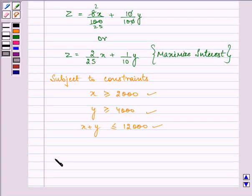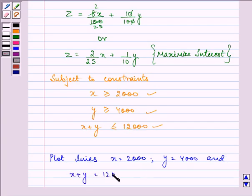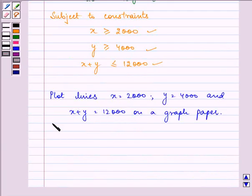Now, we need to plot the lines X equal to 2,000, Y equal to 4,000, and X plus Y equal to 12,000 on a graph paper. For that, let us first find out a few points from here.